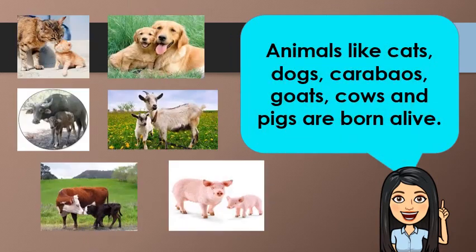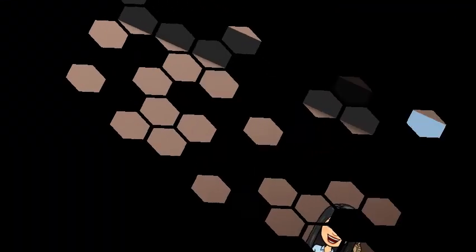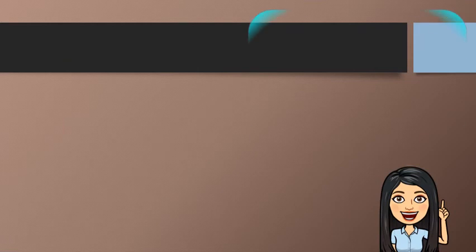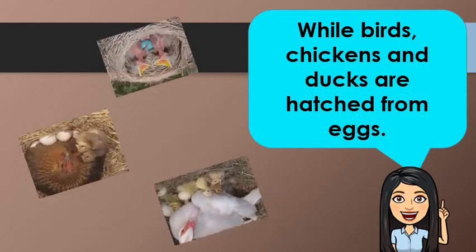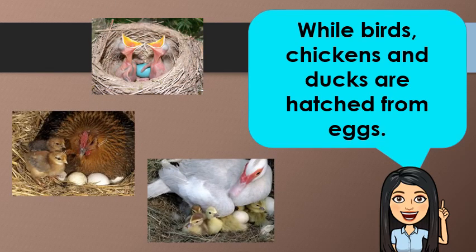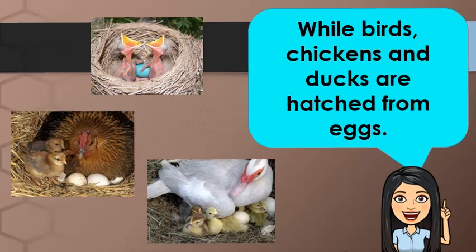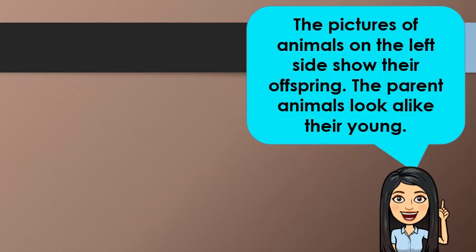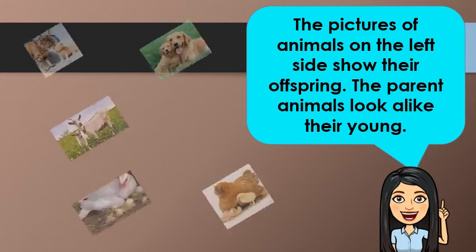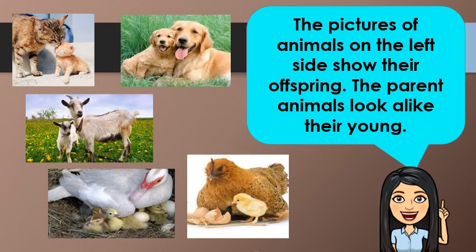Animals like cats, dogs, carabaos, goats, cows, and pigs are born alive. They are called viviparous animals. While birds, chickens, and ducks are hatched from eggs — they are what we call oviparous animals. The pictures of animals on the left side show their offspring. The parent animals look alike their young; they have similar traits and characteristics.